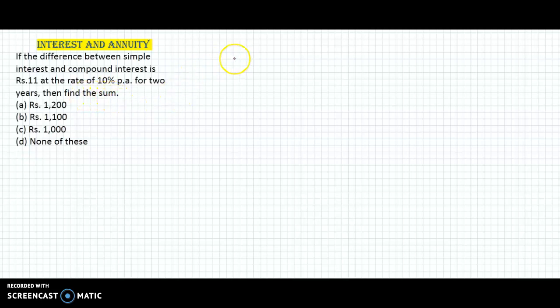We have to find the sum, which indicates we have to find the principal. On this principal we get simple interest and compound interest, and their difference is rupees 11.